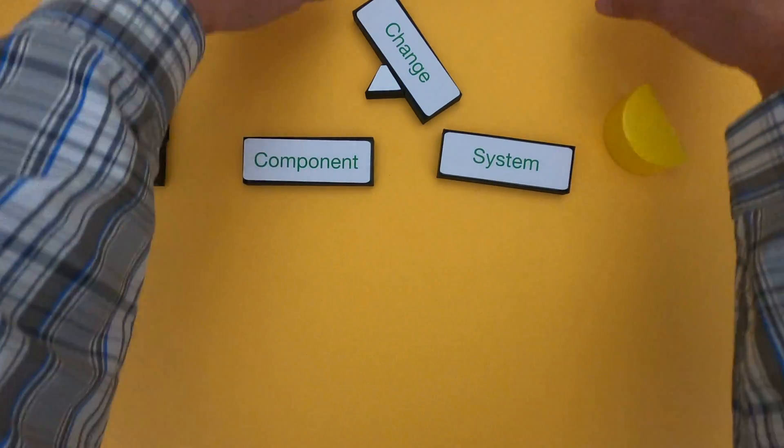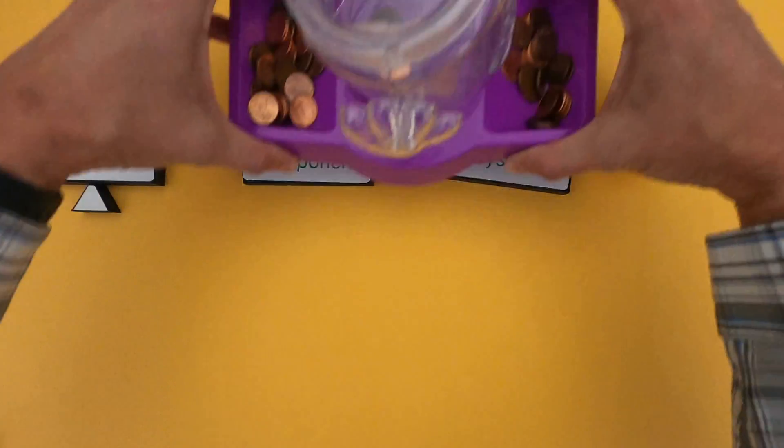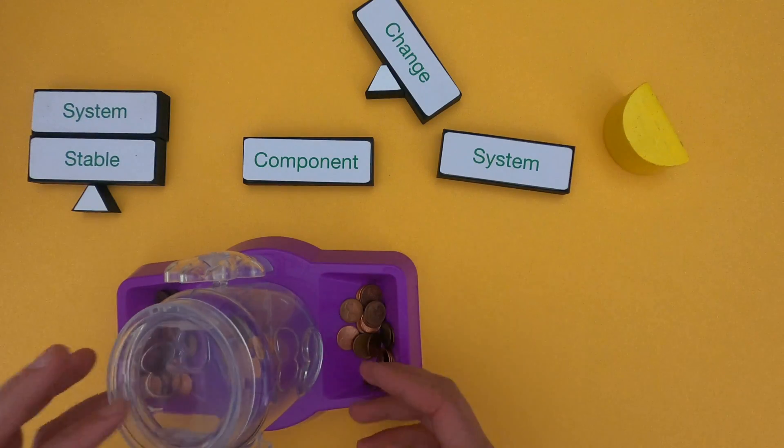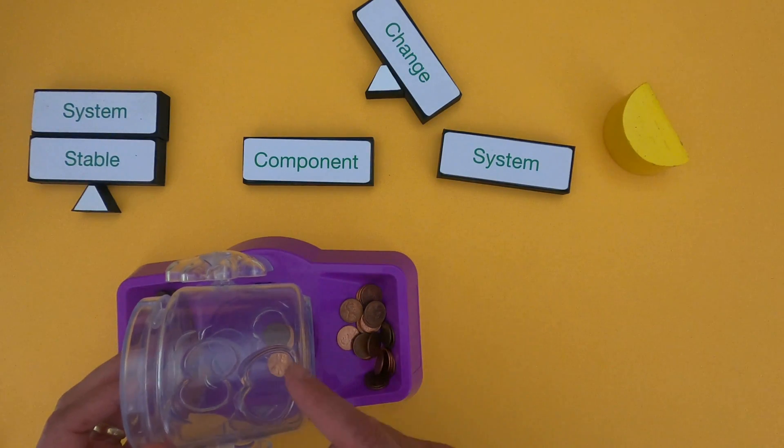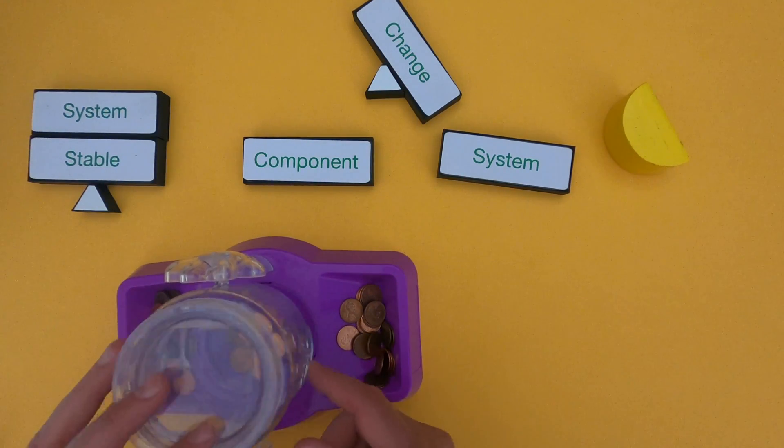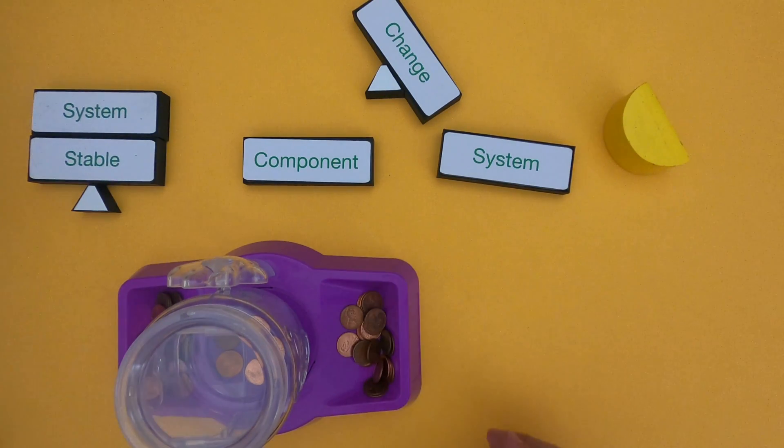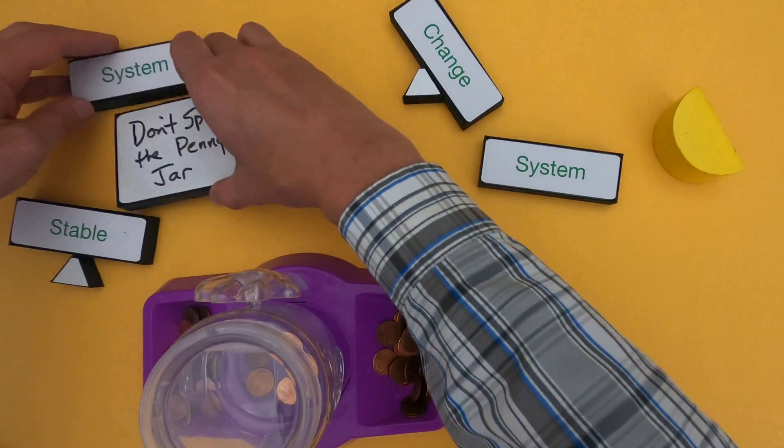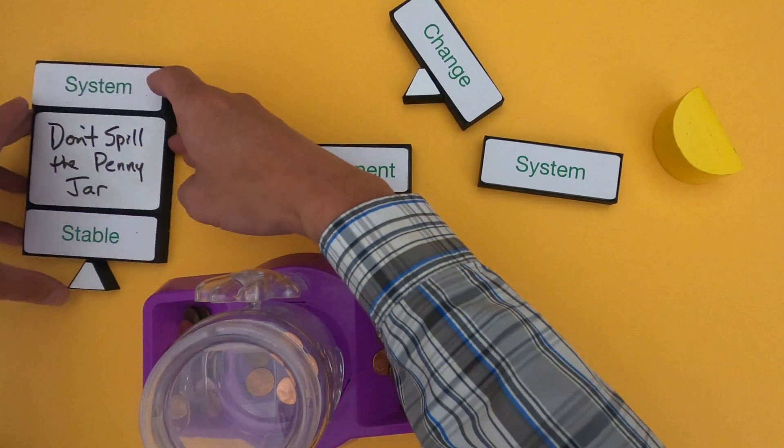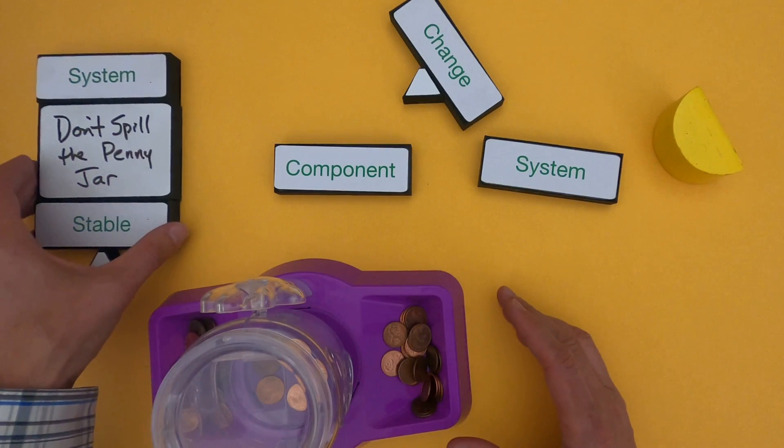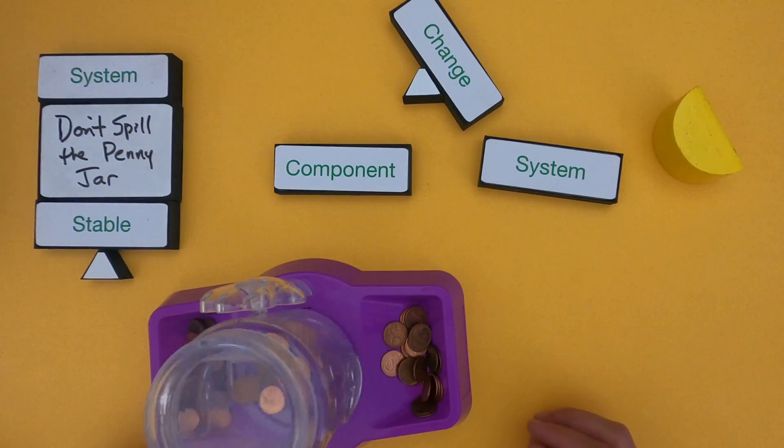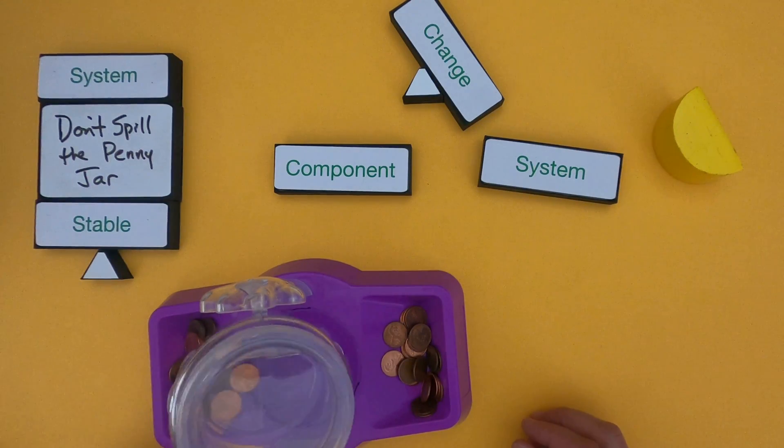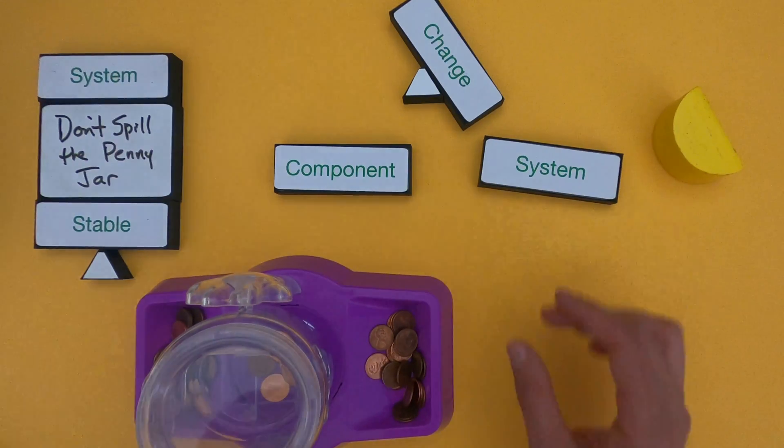We're going to play this game called Don't Spill the Penny Jar - it's really just a modified version of Don't Spill the Beans. You have this jar, a penny jar, and then you have to add pennies to the top and hopefully you don't make it tip. I'm going to define what the system is. The system we're trying to figure out is Don't Spill the Penny Jar, and this is a relatively stable system. If I push it back and forth, it just returns to a steady state. It's not going to change much at all.